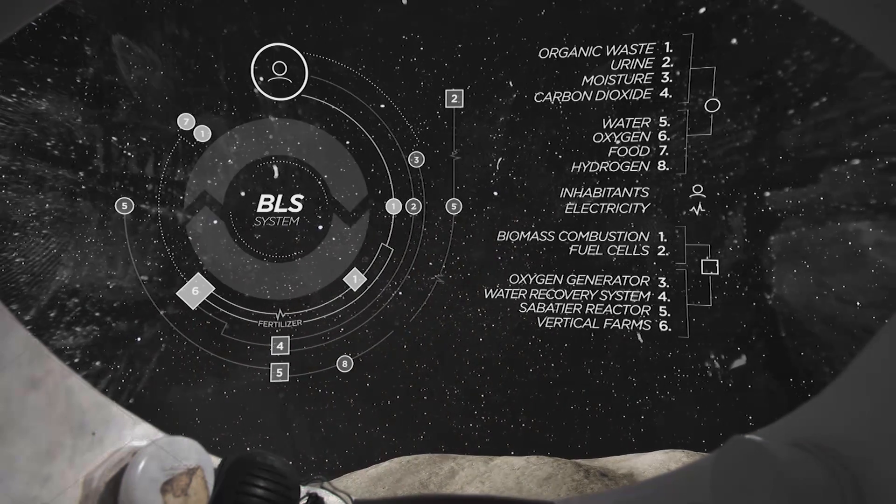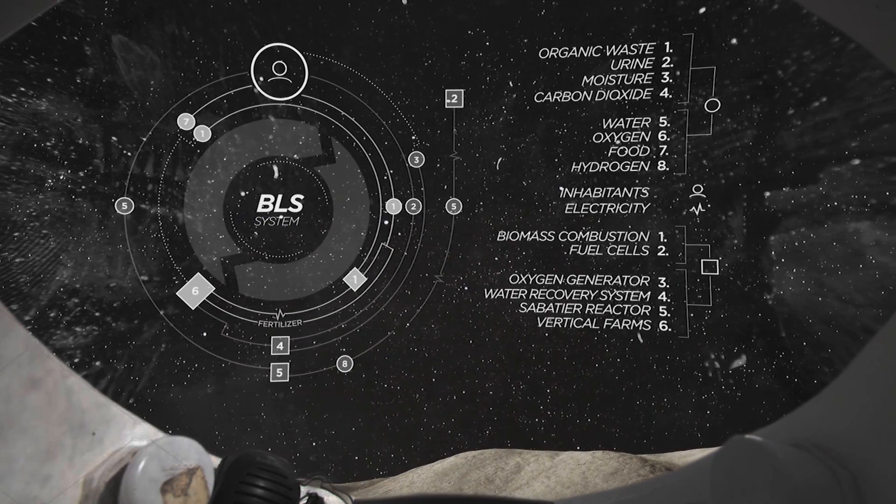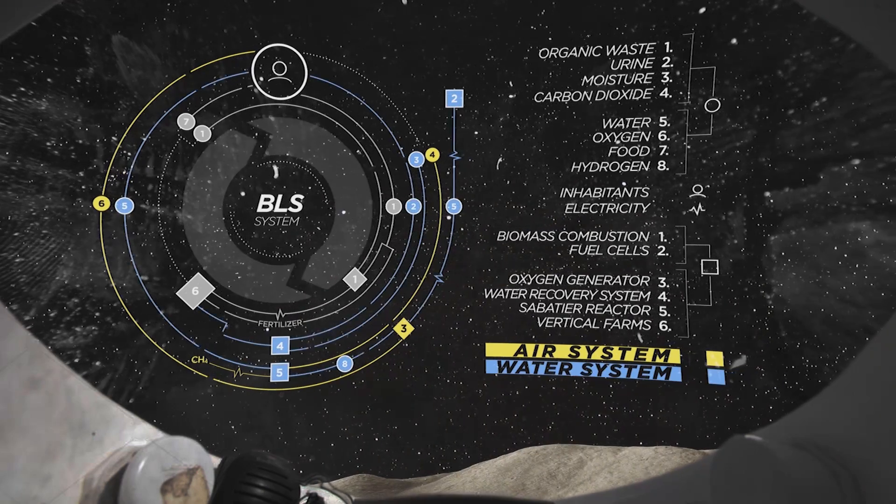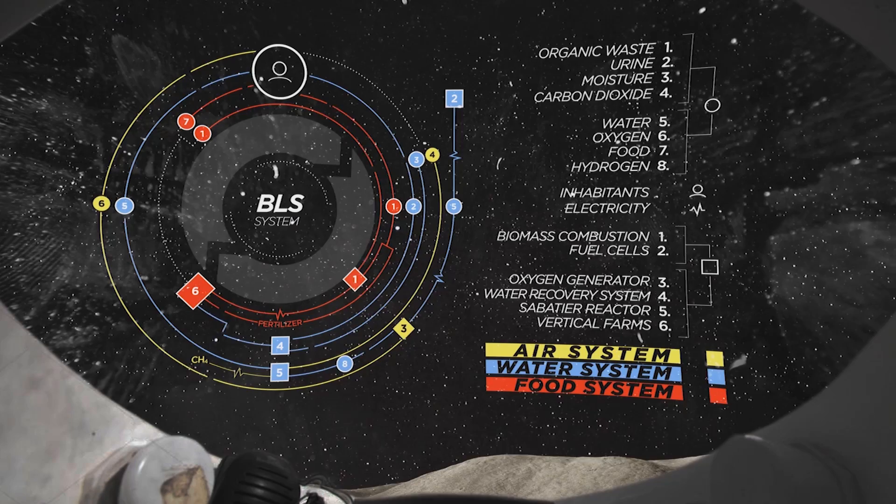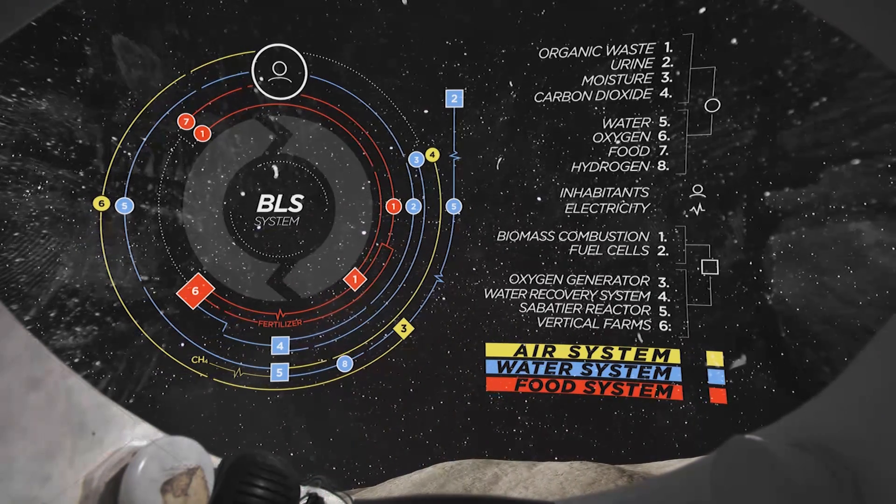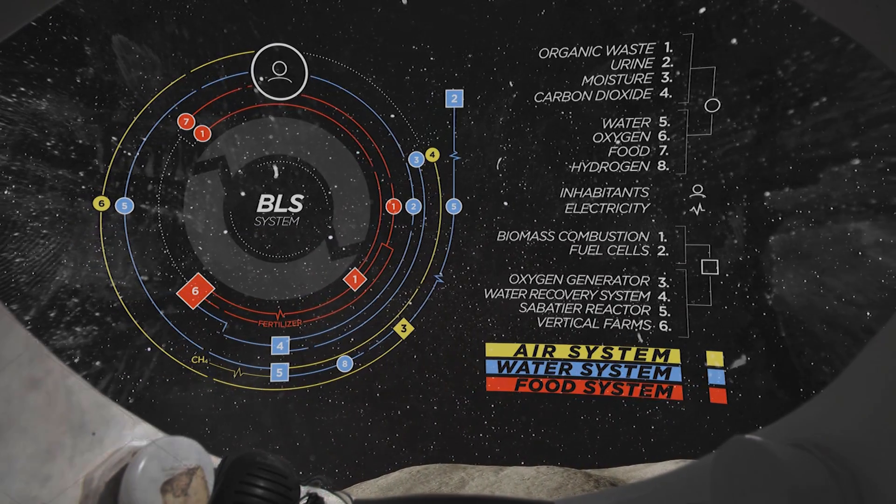The basic life support system forms the foundation for comfortable living in the station. Based on the environmental control and life support system currently employed at the International Space Station, all water and organic wastes are sustainably reused.